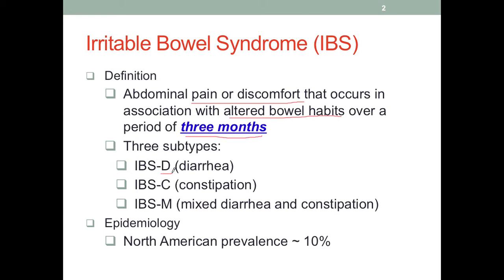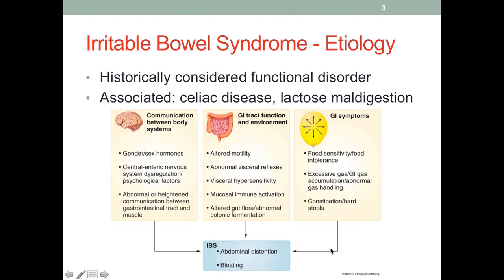There are three subtypes of IBS: D for diarrhea, C stands for constipation. The definition is for altered bowel habits, so either increased or decreased bowel movement frequency can be considered as altered bowel habits. Therefore both diarrhea and constipation, or a mixture of both, can qualify as IBS. This condition affects about 10% of the population in North America, so it's a relatively common condition.